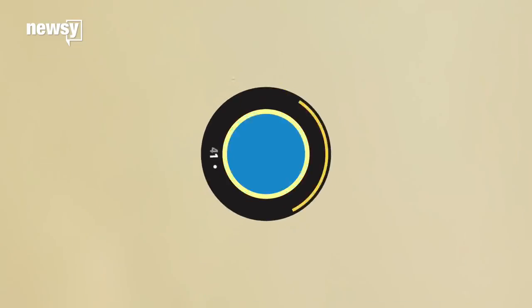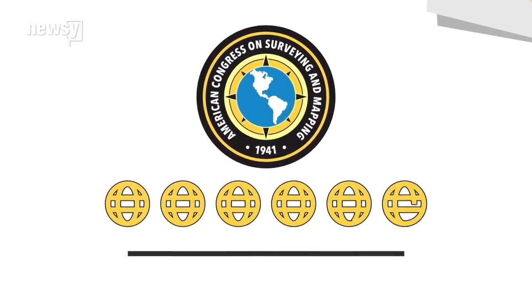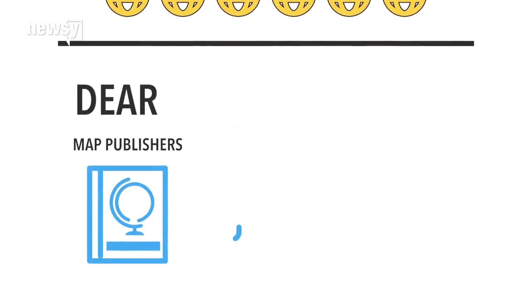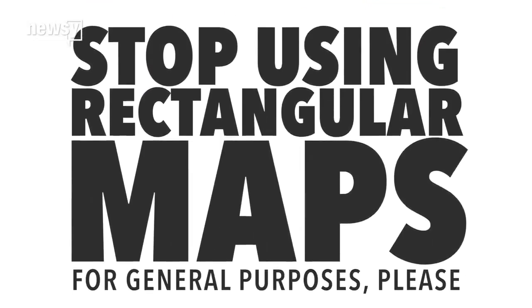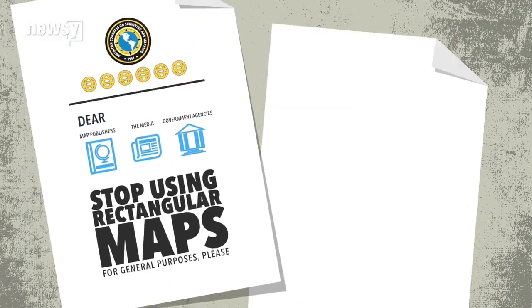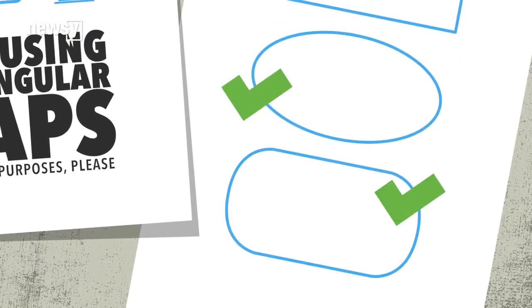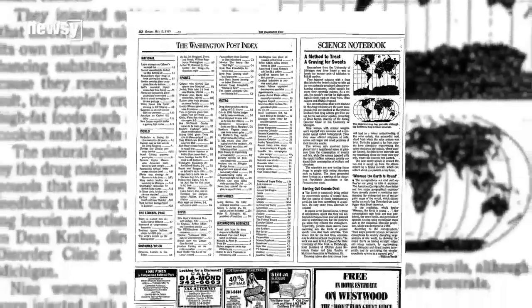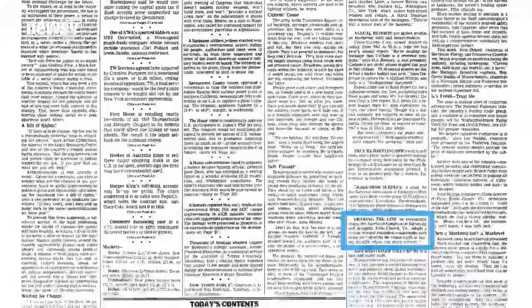Eventually, the American Congress on Surveying and Mapping stepped in with a resolution. The organization and six other cartographic groups urged map publishers, the media, and government agencies to stop using rectangular depictions like the Gall-Peters and Mercator for general purposes. The answer to the Greenland problem was not a new rectangular map, but instead non-rectangular projections like the Mollweide or the Eckert-4. The media picked up the resolution — there was a column in the Washington Post, and it even made the front page of the Wall Street Journal.